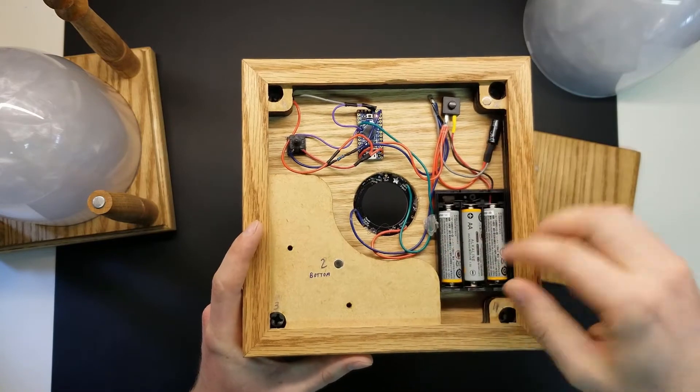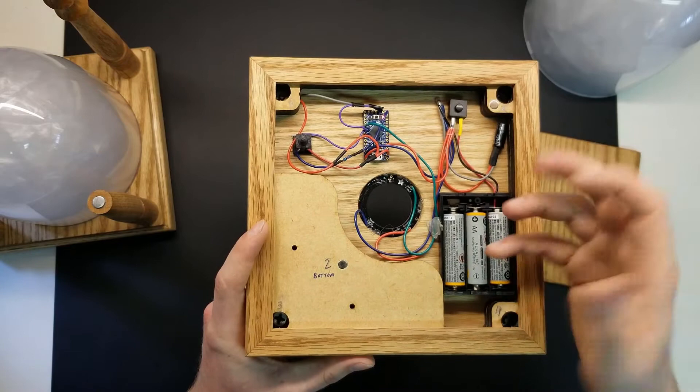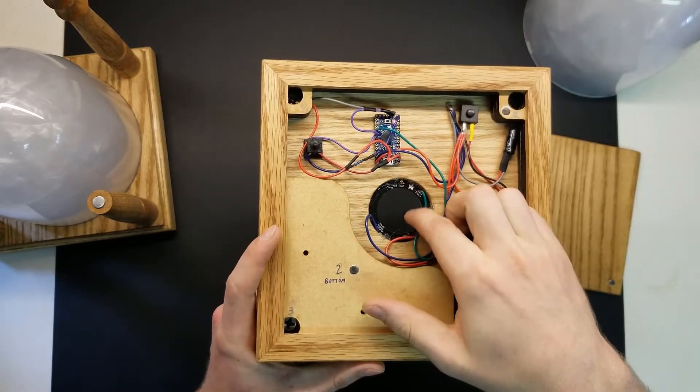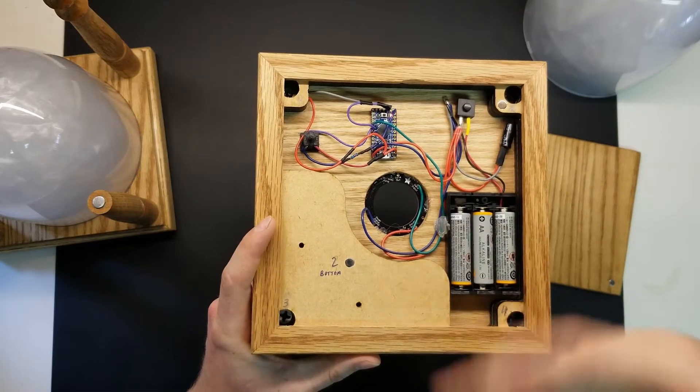So what that capacitor does is when you initially turn on the hourglass, the capacitor helps absorb kind of the buffer of that initial surge of electricity, because sometimes the Neopixels can misbehave with that sudden application of energy.